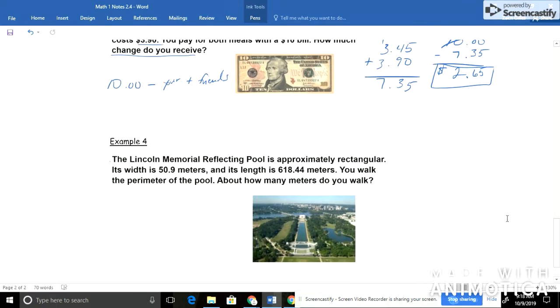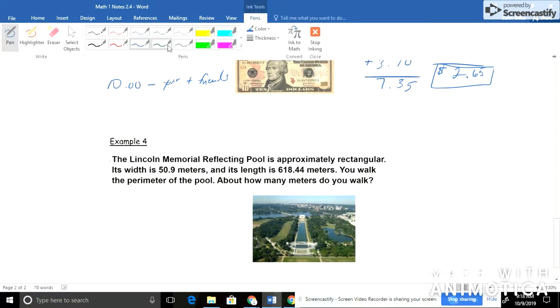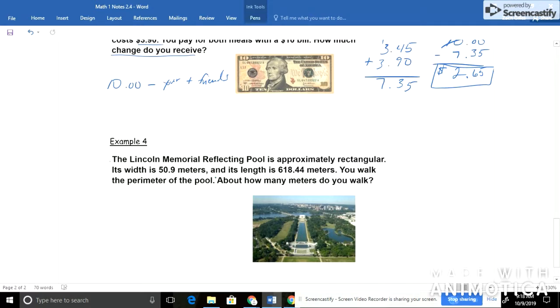Last example for the day. It says the Lincoln Memorial Reflecting Pool is approximately rectangular. Here that pool is. I got to go see it on my class trip when I was a senior. It's really cool. If you ever get the chance, definitely go check it out. Its width is 50.9 meters and its length is 618.44. You walk the perimeter. Remember, perimeter is the distance around something. How many meters do you walk?